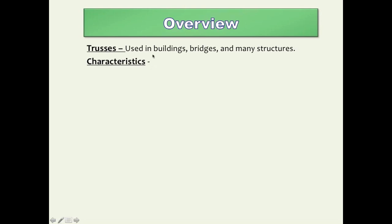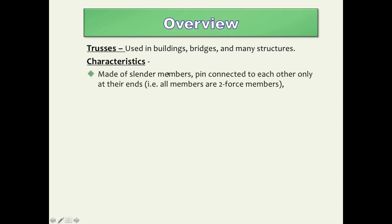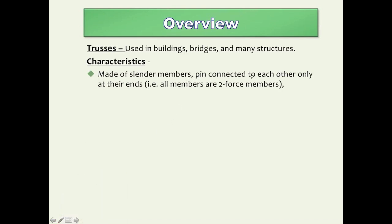The main characteristics of truss structures are as follows. First of all, trusses are made of slender members that are all pin-connected to each other, and they're only connected to each other at the ends. Each member of a truss is connected to other members at the end of each member. If you recall from the definition of two-force members, all members of a truss are two-force members, meaning forces can act only along the line connecting the two ends, and since the members are straight, the forces act along the member.